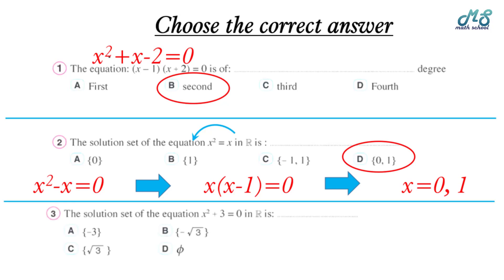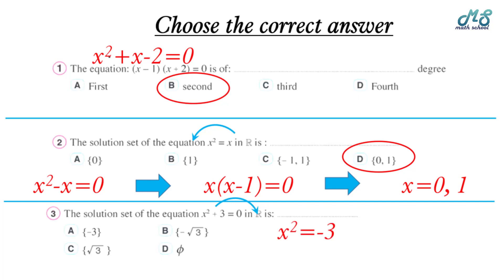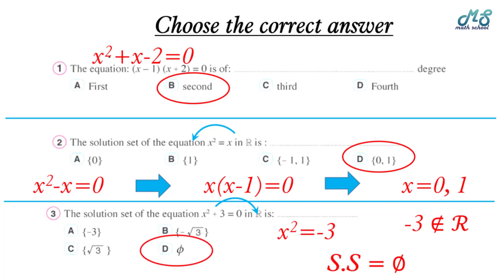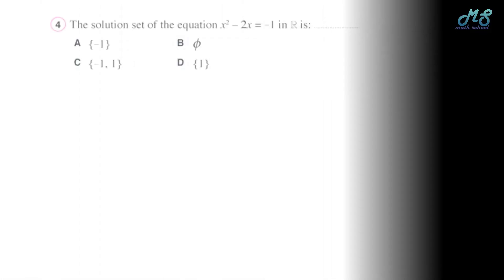Number three: the solution set of x squared plus 3 equals zero in ℝ. Since this is the sum of two squares, moving 3 to the other side gives x squared equals negative 3. Taking the square root, x equals root of negative 3, which is not a real number. So the solution set is phi — the correct answer is D.